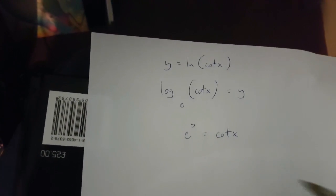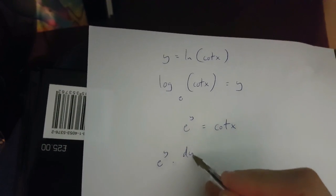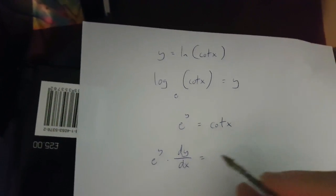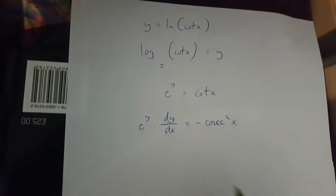If I do this, what I'm going to get right now is e to the power of y times dy over dx is minus cosec x squared.